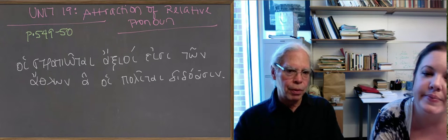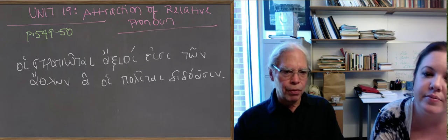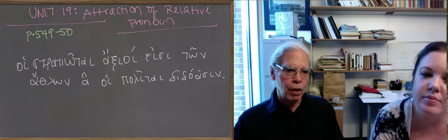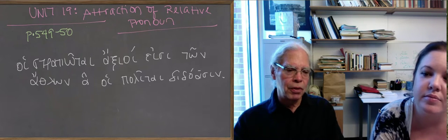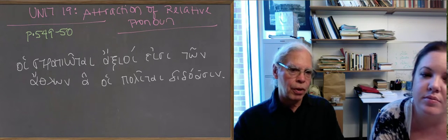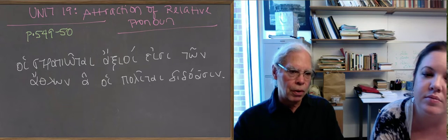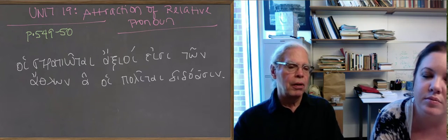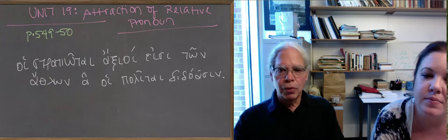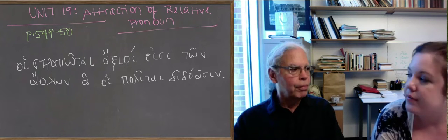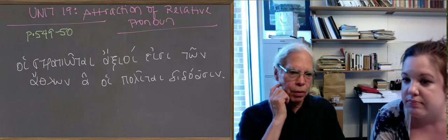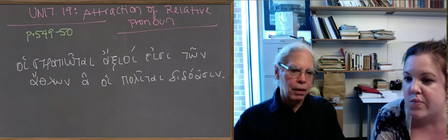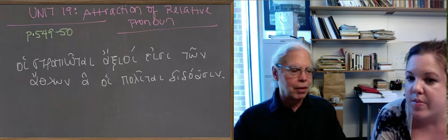If ha were the subject, the verb would be singular, because when a plural subject takes singular verbs. So ha has to be the direct object, and it's in the accusative case. So it's going to mean the soldiers are worthy of the prizes which the citizens give or grant. That's normal Greek practice. That's predictable and translatable, but funny things happen in Greek.